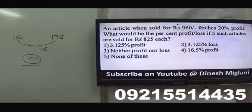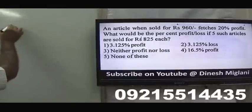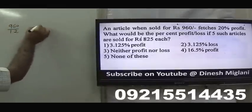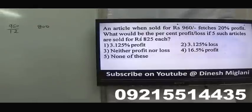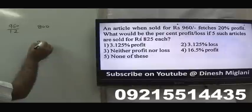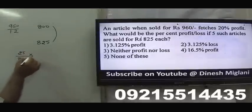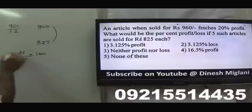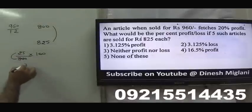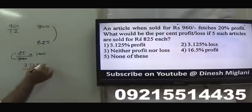Let us take the second problem. An article when sold for 960 fetches 20% profit. I may first find cost price mentally: 960 / 1.2 = 800. What will be the profit or loss if 5 such articles are sold for 825 each? Cost is 800, selling price is 825. Profit is 25/800 × 100 = 3.125%. First is my answer.